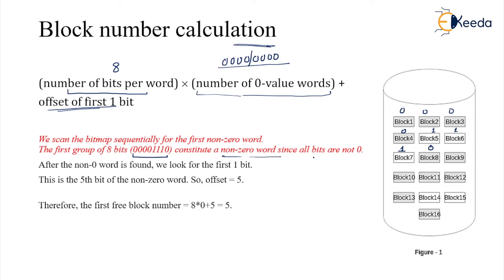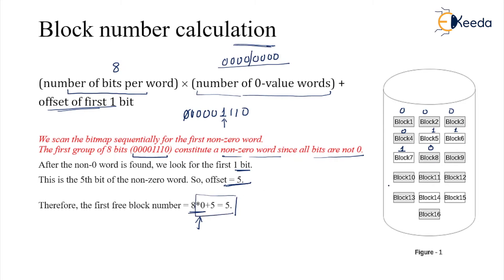This constitutes a non-zero word since not all the bits are zero. So the first non-zero word is found, and we look at the first 1-bit. Here the offset is 1, 2, 3 — the fifth position. So the offset equals 5. The block number is calculated as: 8 × 0 (since the first word is found as the non-zero word) plus 5, giving block number 5. Adjustment can be done if the index starts from 0.